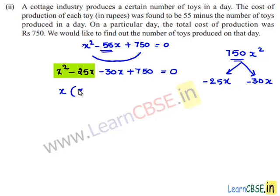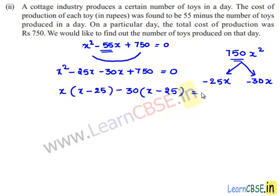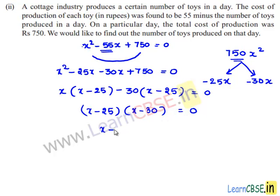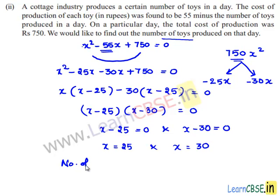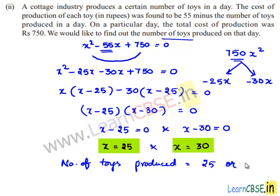Taking x common from the first and second terms gives x minus 25, and taking minus 30 common from the remaining terms gives minus 30 times (x minus 25). So (x minus 25)(x minus 30) equals 0, giving x minus 25 equals 0 or x minus 30 equals 0. Therefore x equals 25 or x equals 30. The number of toys produced on that day is either 25 or 30.